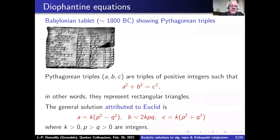In that case, you have a general form of the solution, written here in red, with arbitrary integers K, P, and Q. This is a basic formula that one studies at the end of high school or beginning of university.